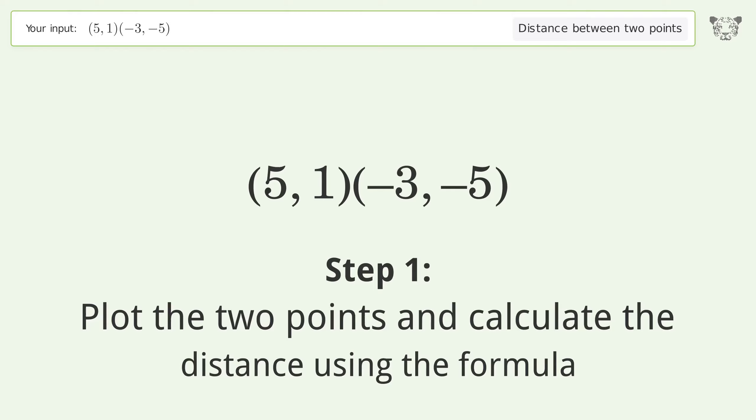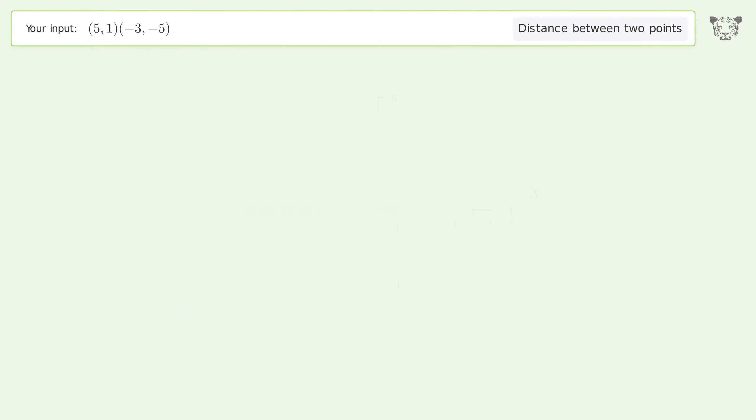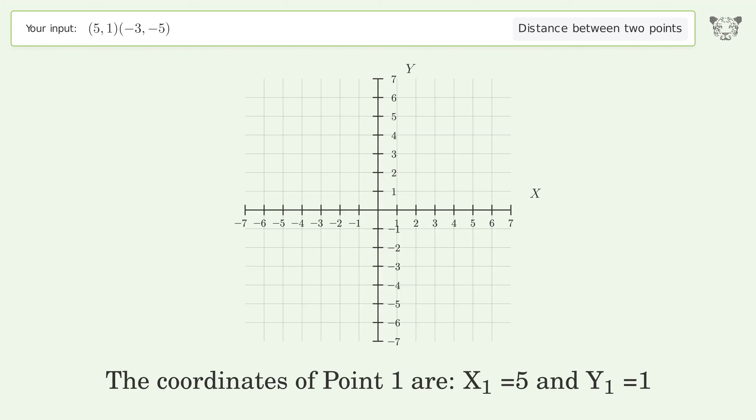The coordinates of point one are x₁ equals 5 and y₁ equals 1. The coordinates of point two are x₂ equals negative 3 and y₂ equals negative 5.